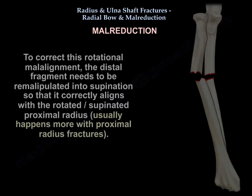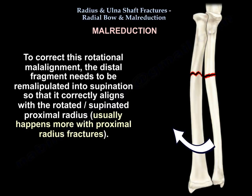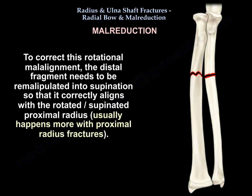To correct this rotational malalignment, the distal fragment needs to be re-manipulated into supination so that it correctly aligns with the rotated, supinated proximal radius. This usually happens more with proximal radius fractures.